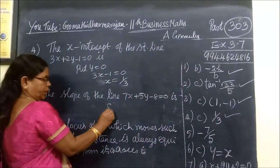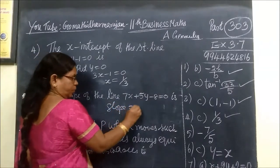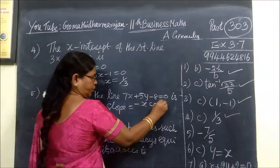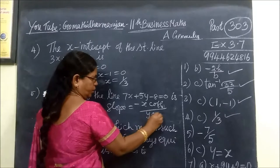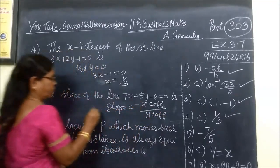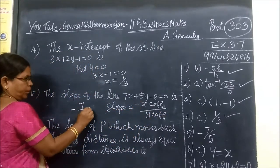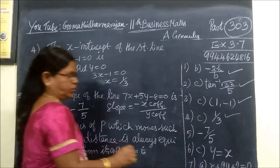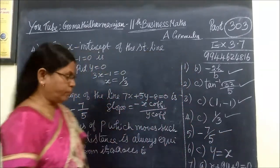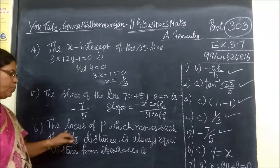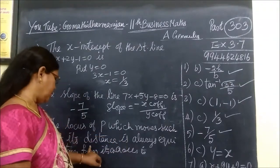The slope of the line: slope is minus x coefficient divided by y coefficient, which is -7/5. So the answer is -7/5.